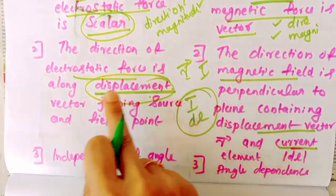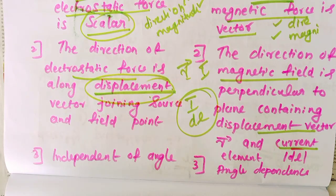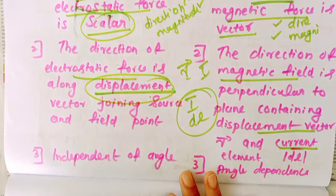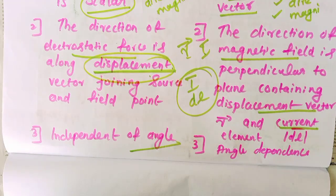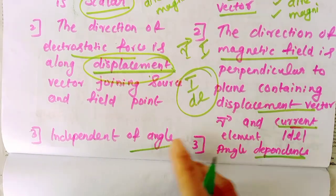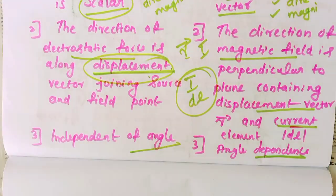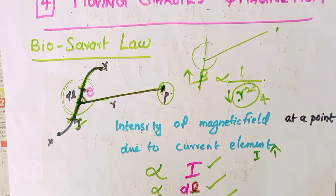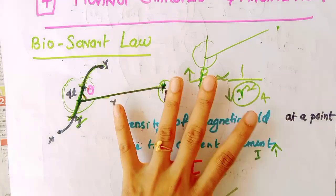If you understand the direction of electrostatic forces along the displacement vector, note that in Biot-Savart Law, there is a sine theta term, meaning the magnetic field depends on the angle between the element and the line. This is an important comparison. It is very important to know how to read the derivations of Biot-Savart Law. Let's try to go through those derivations.